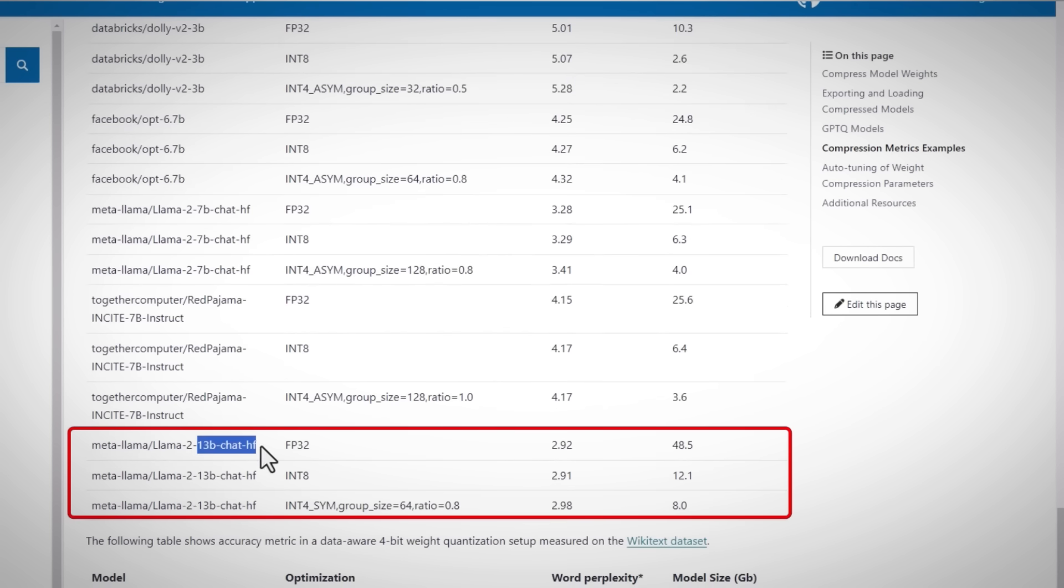Or the Llama 2 13 billion from 50 GB at floating point 32 to 12 GB at int8 and down to 8 GB at int4. And perplexity, almost the same.